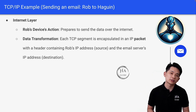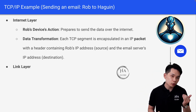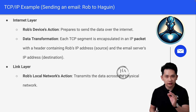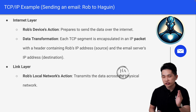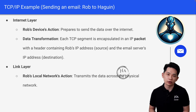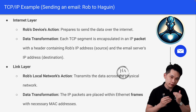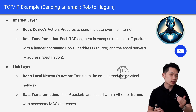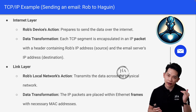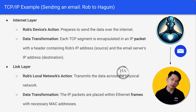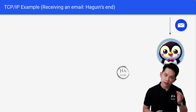Lastly, at the link layer, Rob's local network will transmit the data across a physical network. The IP packets are placed within internet frames with the necessary MAC addresses. These are the high-level data transformations at the sending side.